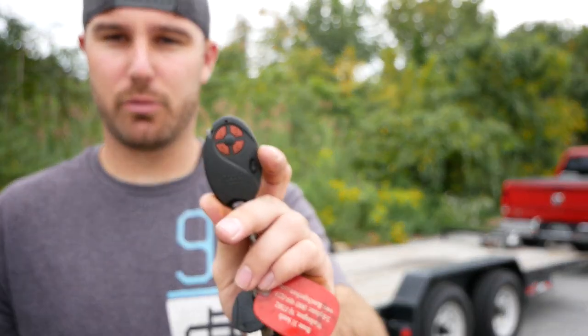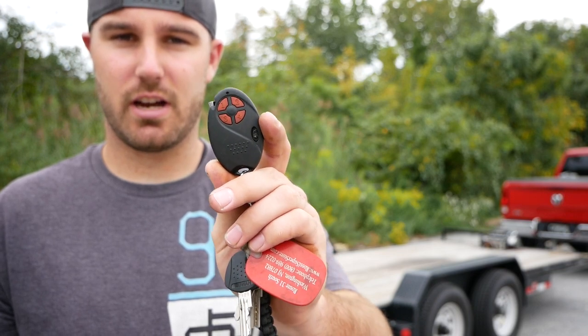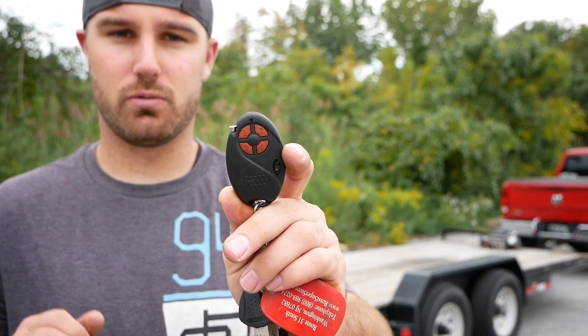On this trailer, I control two functions, one being the winch, and two being the hydraulic function of the tilt. Now, as you can see, there's four buttons on this remote. It is going to be the hydraulic tilt up and down, and the winch control in and out.